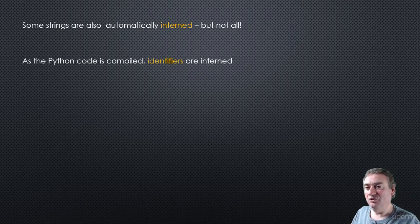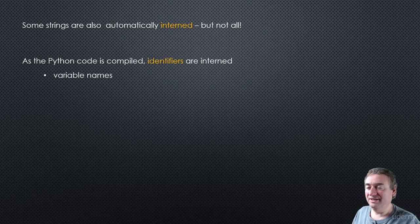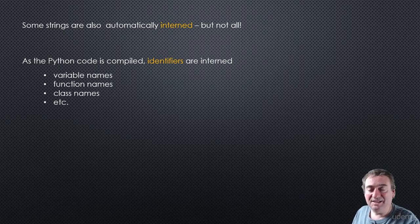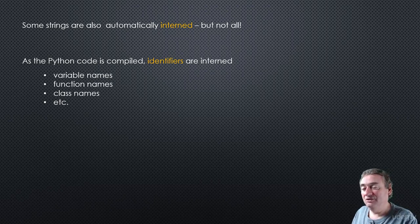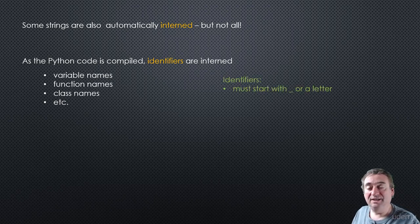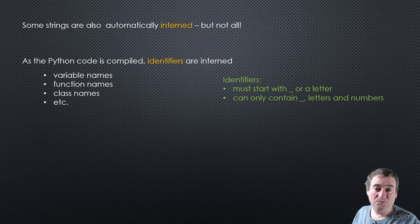As the Python code is compiled, identifiers are interned. What are identifiers? They're things like variable names, function names, class names, and anything else that you use inside your code. Your code is essentially a lot of strings, and it gets compiled by Python, which will intern all these identifiers. As a reminder, identifiers must start with an underscore or a letter, and then can only contain underscores, letters, and numbers.